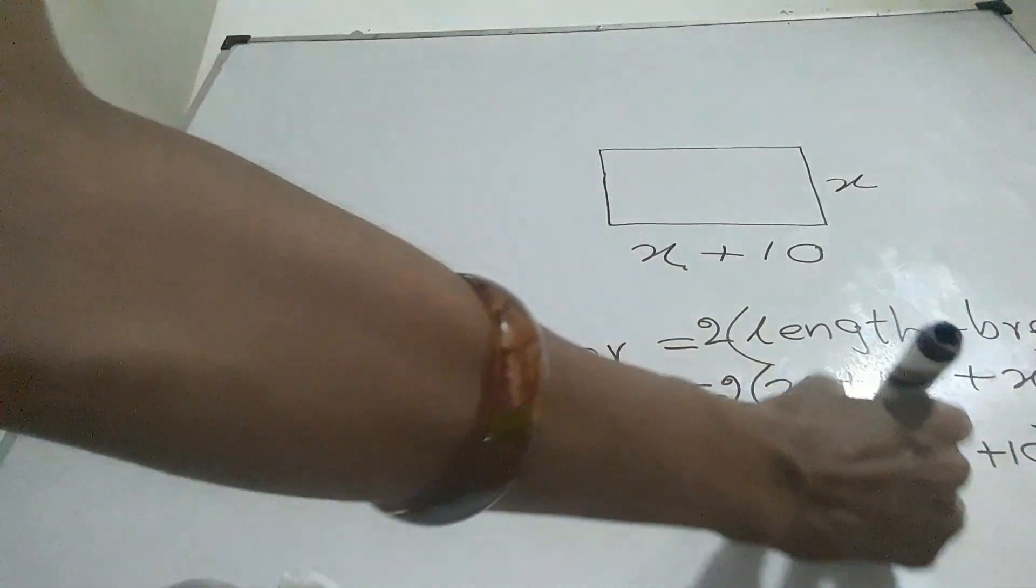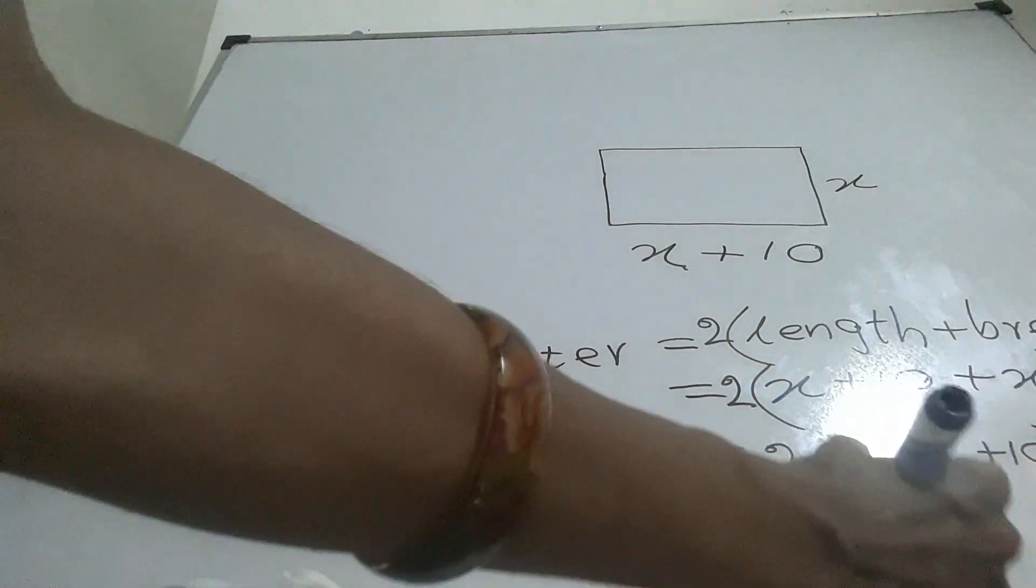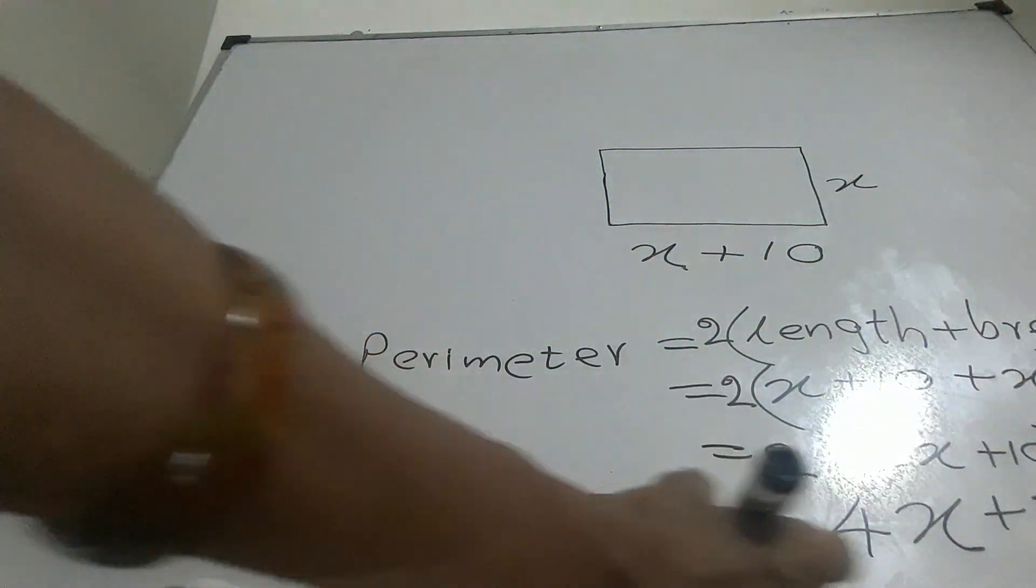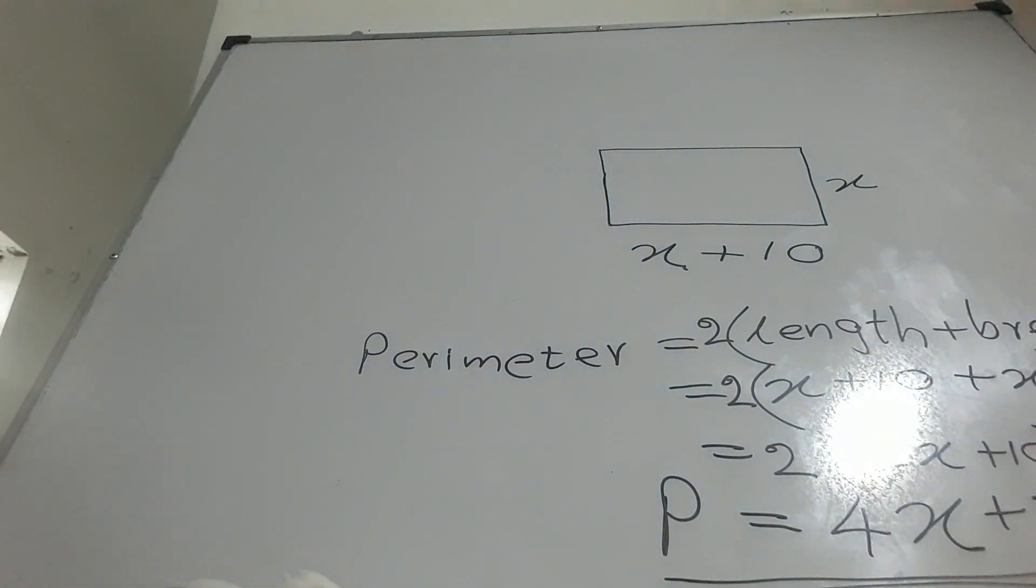This multiplied by 2. 2 times X is 2X, 2 times 10 is 20. P is equal to 4X plus 20.